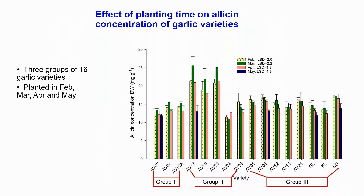During the standard growing condition in Queensland, garlic can grow from March to September and shows different responses to temperature. That's why we conducted a further study to see how planting time affects allicin concentration. In this experiment, we planted garlic in February, March, April, and May, using 16 garlic varieties belonging to group 1, group 2, and group 3. The results show that allicin concentration changed differently between planting times and groups.